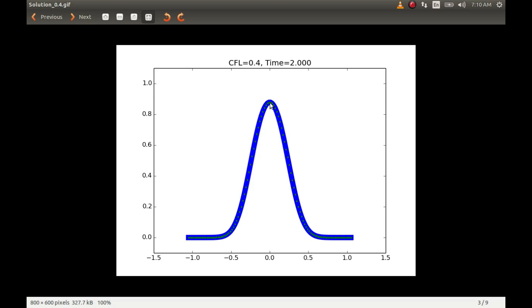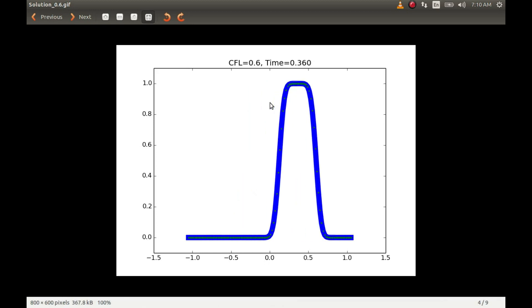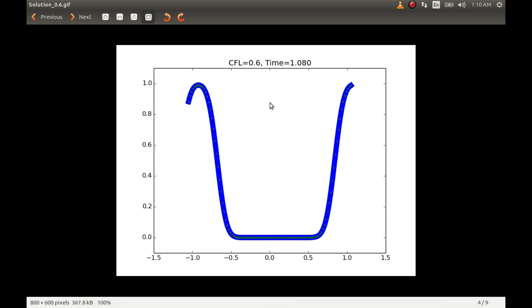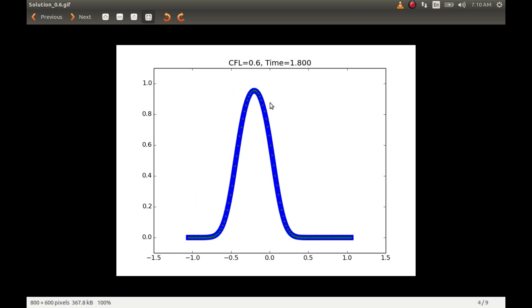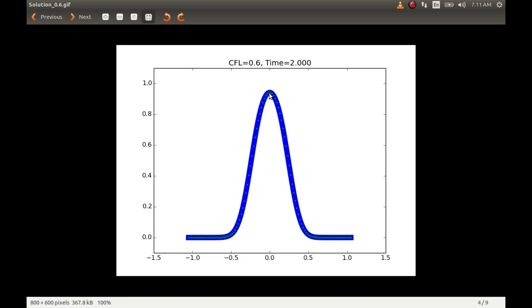So if I keep my cursor here and again run this animation for CFL 0.6, then you will see that the diffusion reduces further and the peak moves higher. Right now the peak has reached here, which is obviously a reduction in error because the diffusion error has reduced.